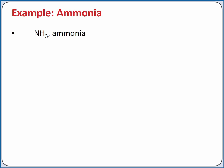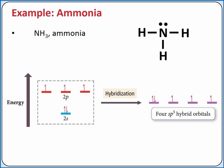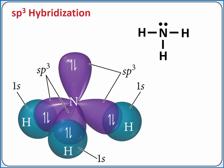We can apply the same process to ammonia, NH3. We also have four electron groups around nitrogen in ammonia, so we'll use sp3 hybridization. When we add nitrogen's five valence electrons to the four sp3 hybrid orbitals, one of the hybrid orbitals is filled with a lone pair of electrons. So in ammonia, we see that a lone pair of electrons can occupy a hybrid orbital.